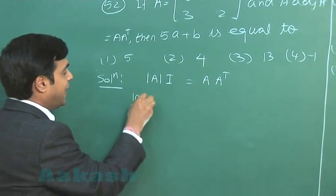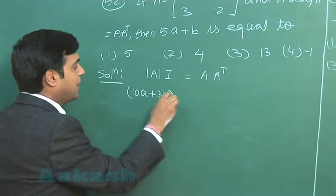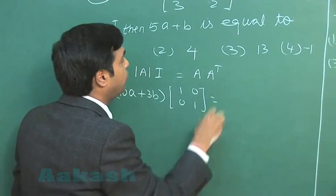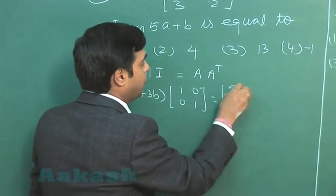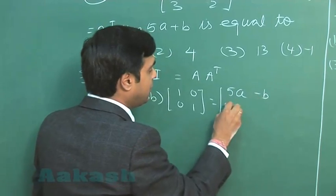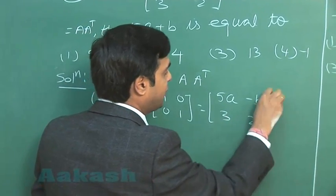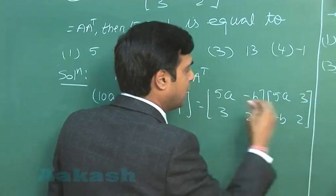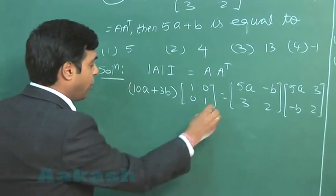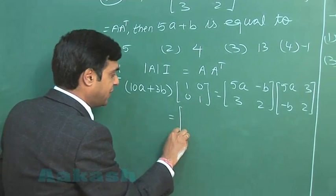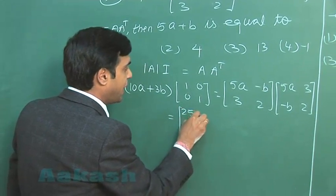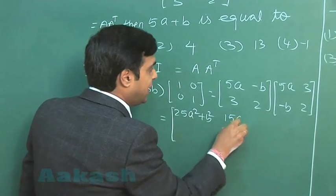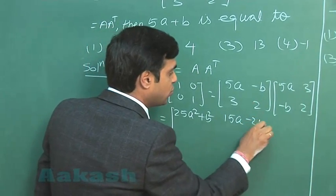So we can write here 5a squared, 10a plus 3b multiplied with identity matrix of 2 by 2 equals 5a minus b, 3, 2 and the transpose, that is 5a minus b here, 3, 2. Simplifying on the right-hand side, we can write here as 25a squared plus b squared, 15a from this one minus 2b.